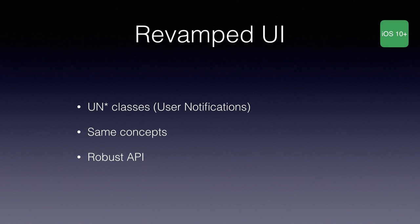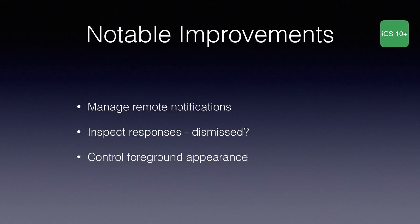Notable improvements in the new API: you can now manage remote notifications. Previously you were only able to manage locally scheduled notifications — get back an array of objects, delete, update, change properties. Now you can do that with remote notifications too, which is super cool. Previously all you could do was clear them by sending the badge to zero. Some workarounds involved sending a silent push and triggering a local one for collapsing and deletion, but now it's coming natively in iOS 10.